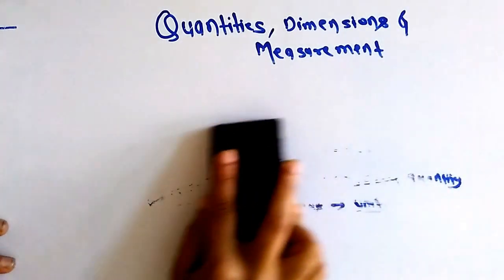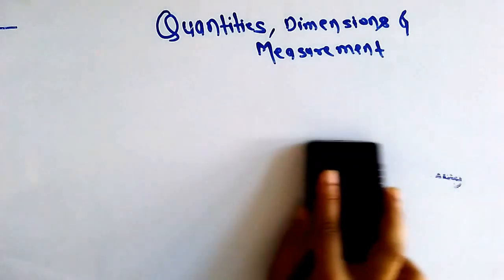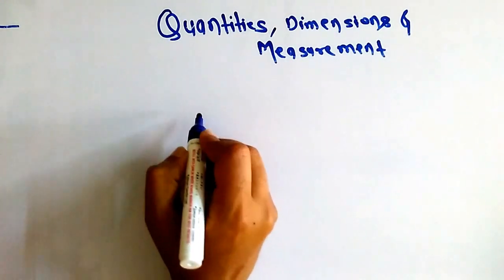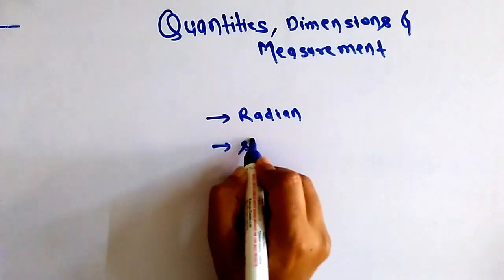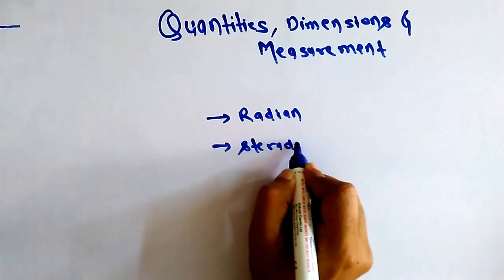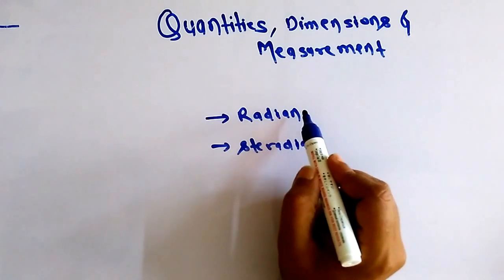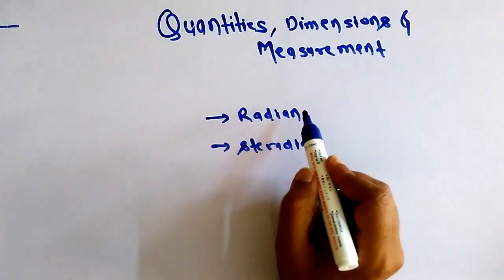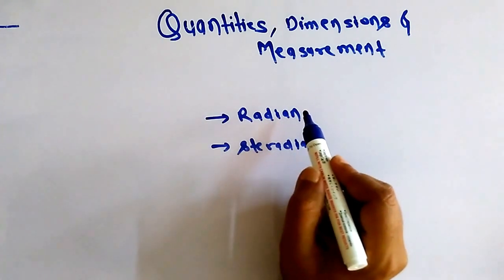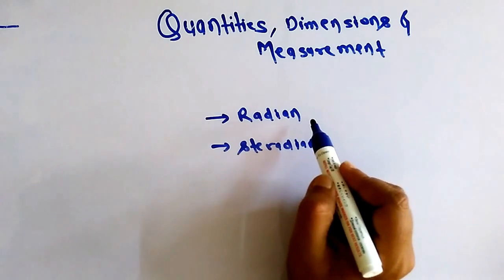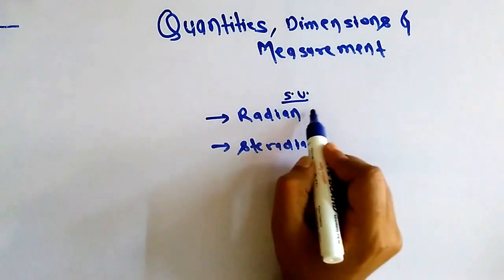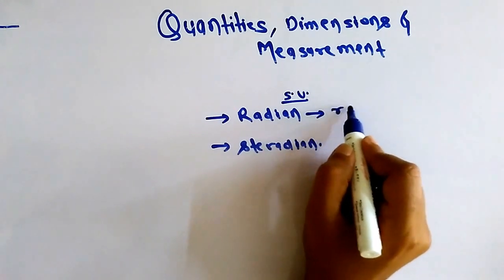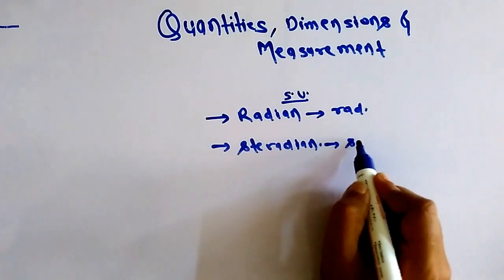We have seen the seven fundamental quantities and their SI units. There are also two supplementary units: one is radian and another one is steradian. Both also come under the category of fundamental units, but since we came to know about them later, we call them supplementary units. Radian is abbreviated as 'rad' and steradian as 'sr'.